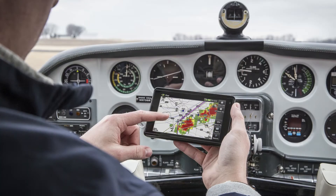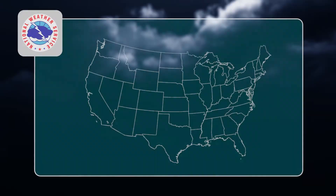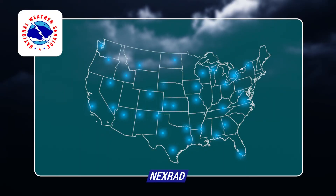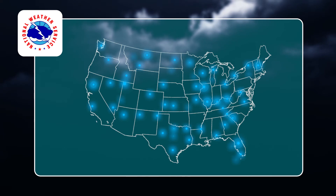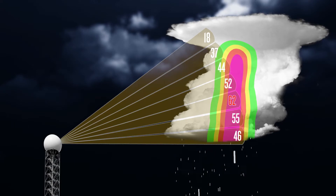Here we'll discuss the differences between composite reflectivity and base reflectivity, as well as how to best interpret them on your weather page. NEXRAD, or Next Generation Radar, is an extensive network of high-resolution Doppler radar ground sites operated by the National Weather Service.